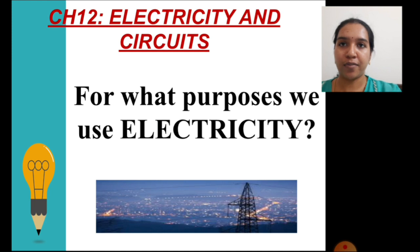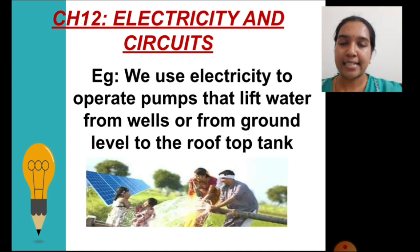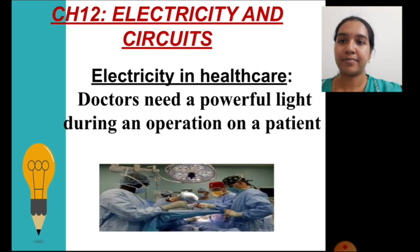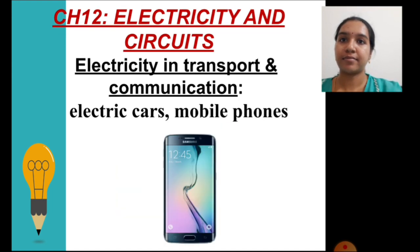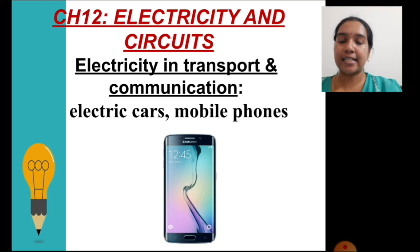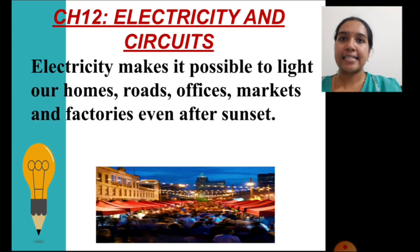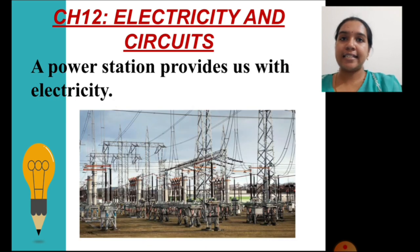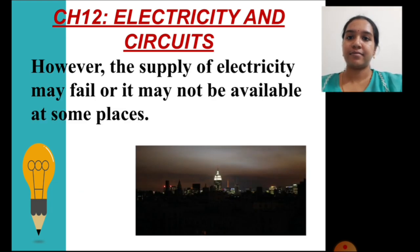Let us recall the uses and purposes of electricity. Mostly we use electricity to pump groundwater to the surface or to a rooftop tank in case of a building. Electricity plays a key role in hospitals, at homes, and also in the use of electric cars, mobile phones, etc., which made transport and communication easier and helped reach destinations in lesser time. Electricity made life easier and enabled work during nights or after sunset. Electricity is supplied to different places from the power station of that area, but it is not evenly distributed to all places at all times.